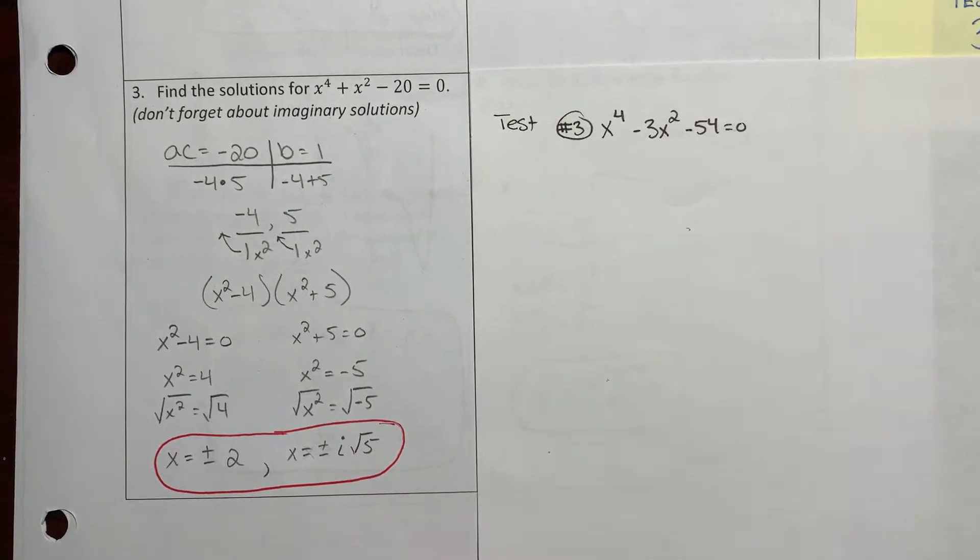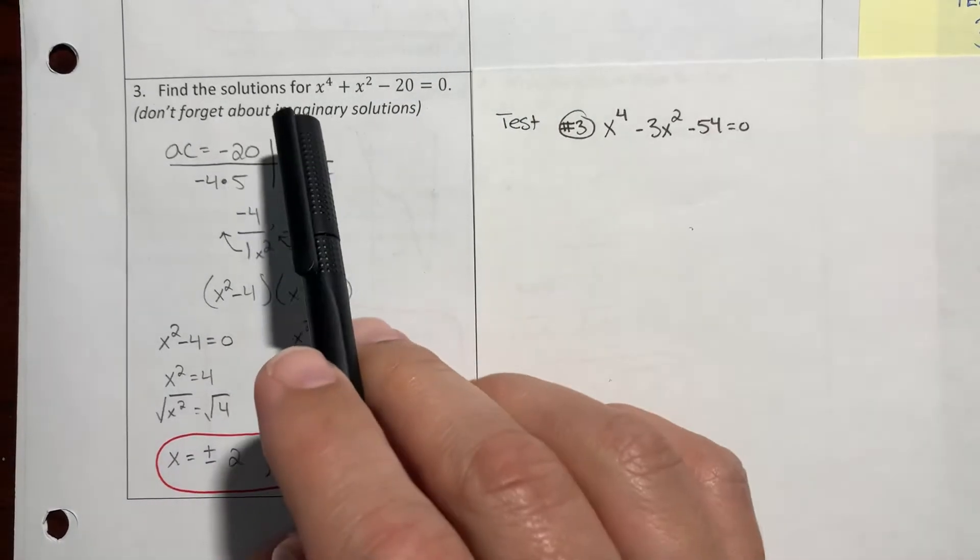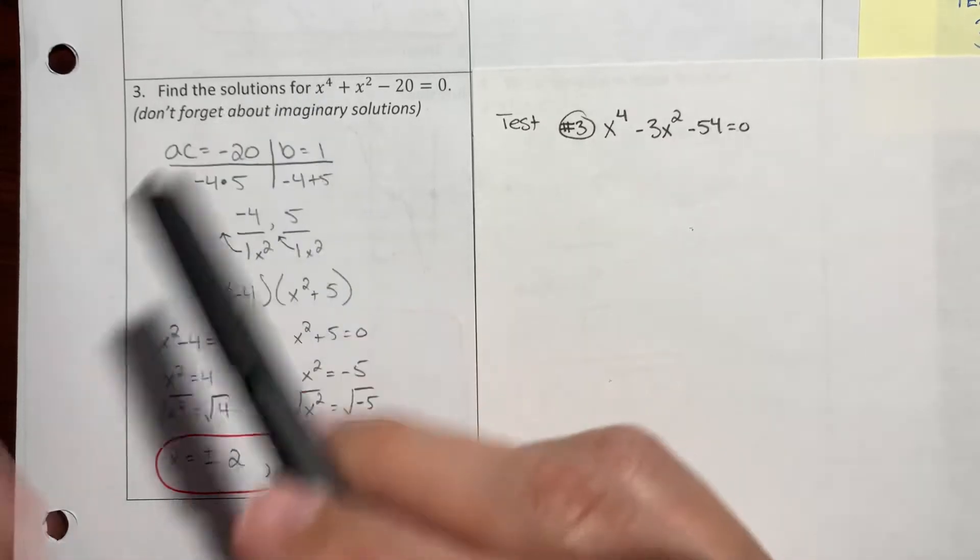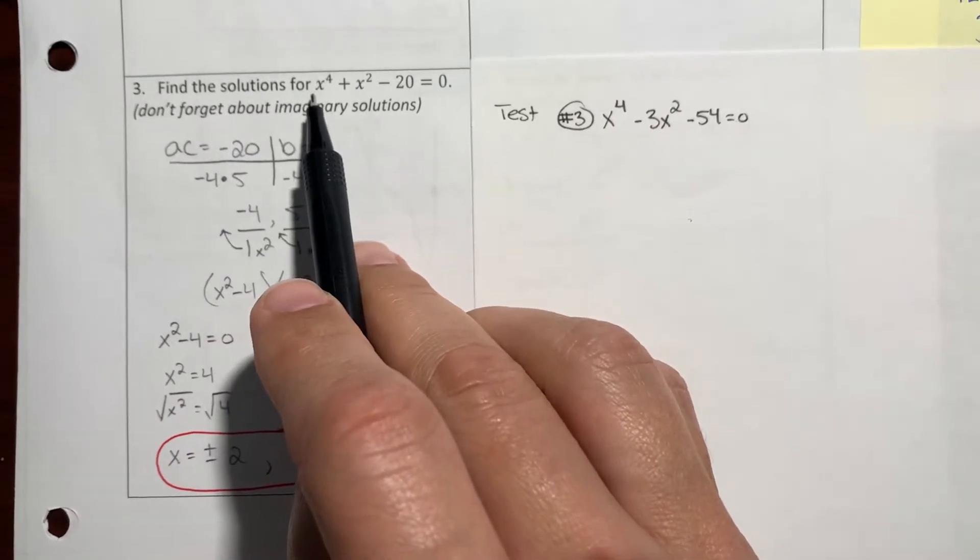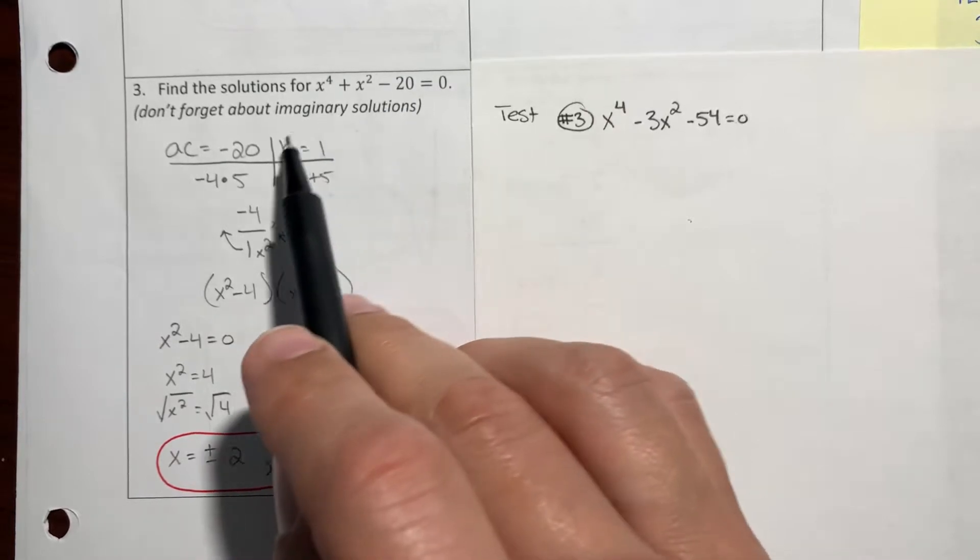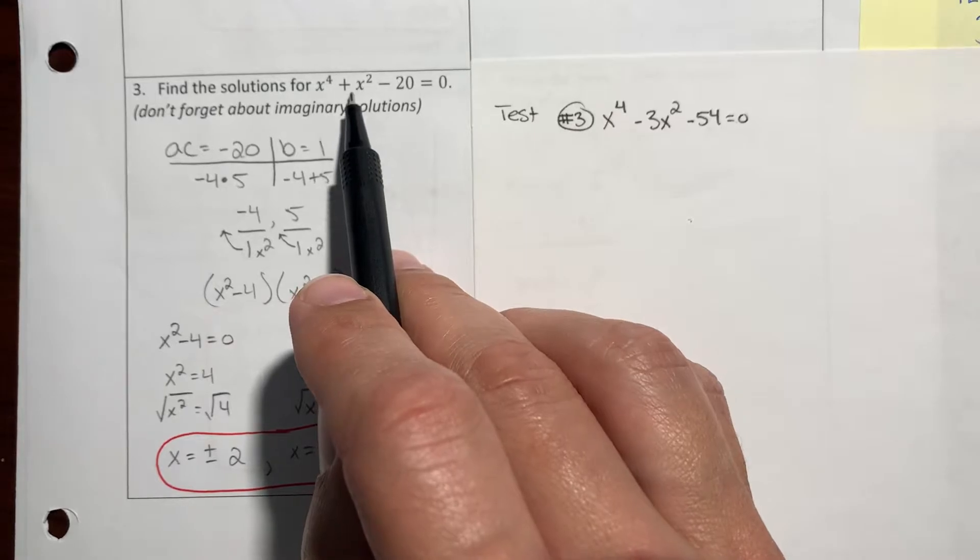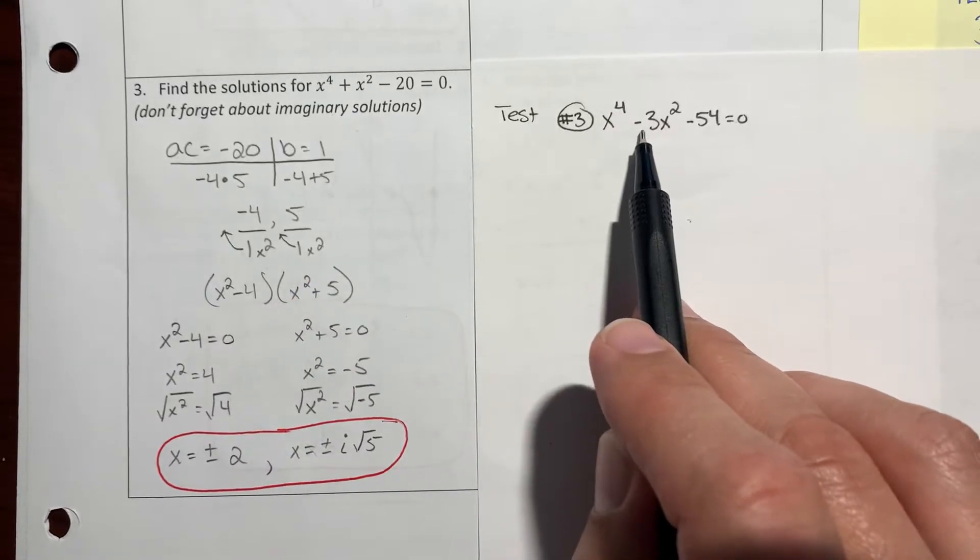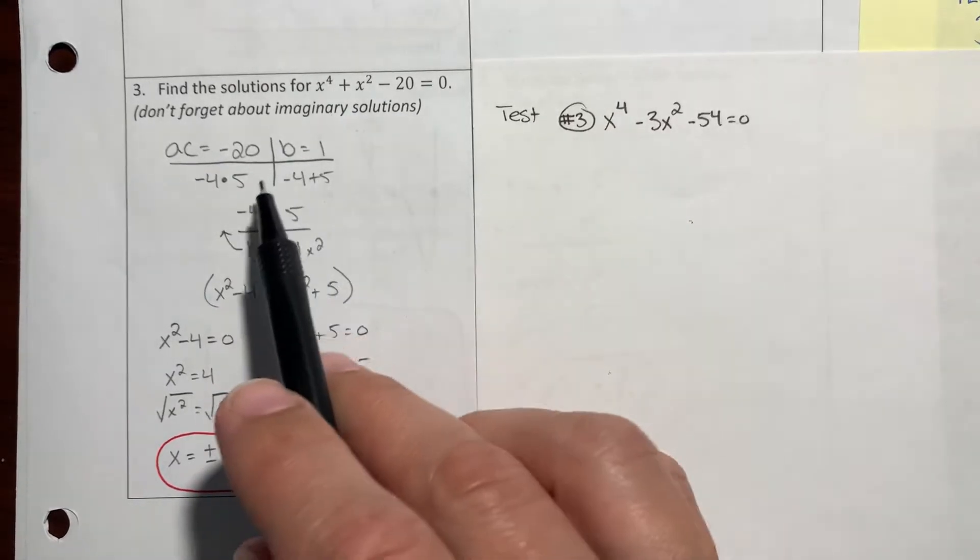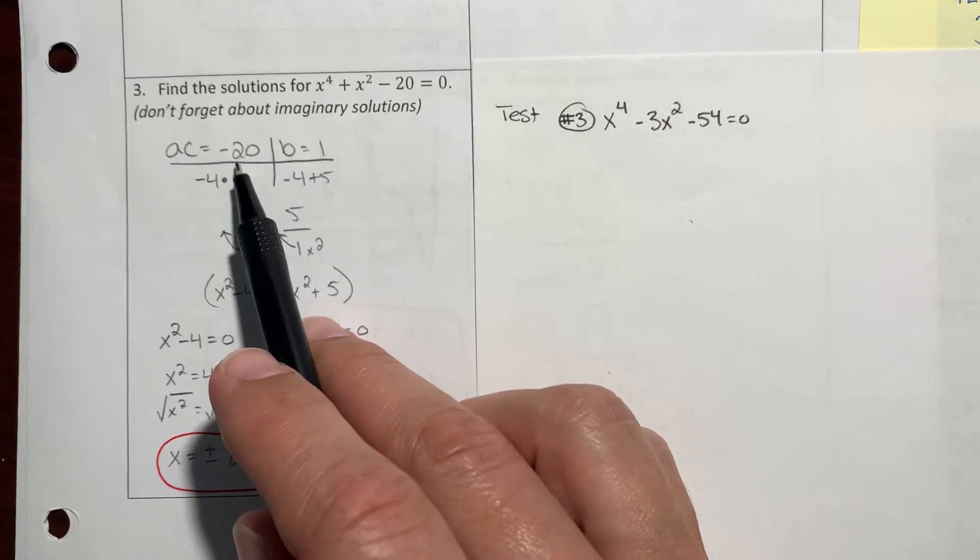What I had to do here is I was basically doing that AC factoring where I multiply the a times c. So the a value here is 1 and then c is negative 20, so AC was negative 20. The b value, the one in the middle, is a positive 1. So I have to figure out what are the factors of negative 20.